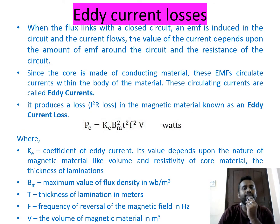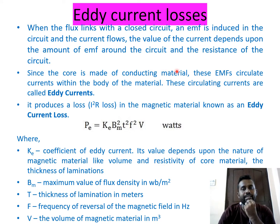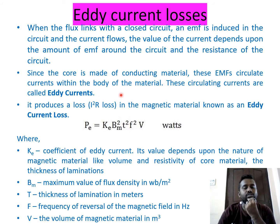Eddy currents: when flux links with a closed path, an EMF is induced and current flows. Since the core is made of conducting material, this EMF circulates currents within the body of the core — not only in the windings but also in the core itself. These circulating currents are called eddy currents; they do not participate in the actual transformation process.